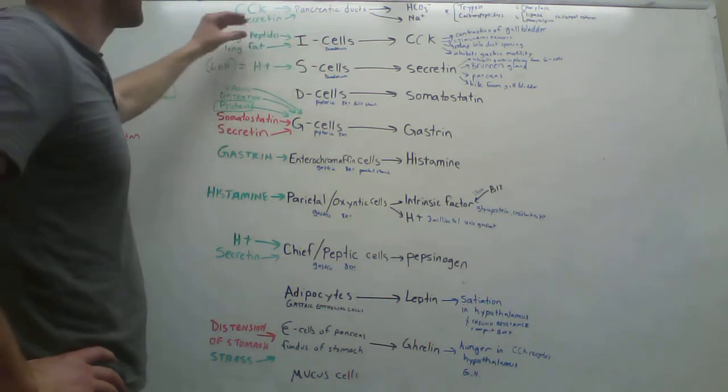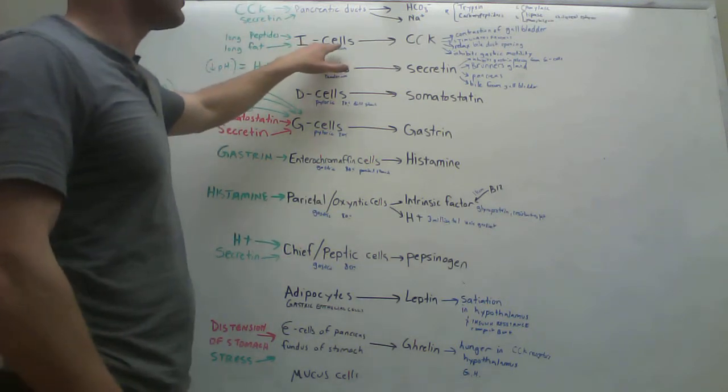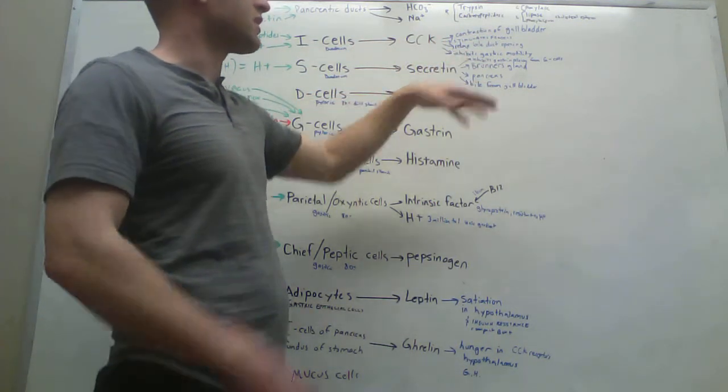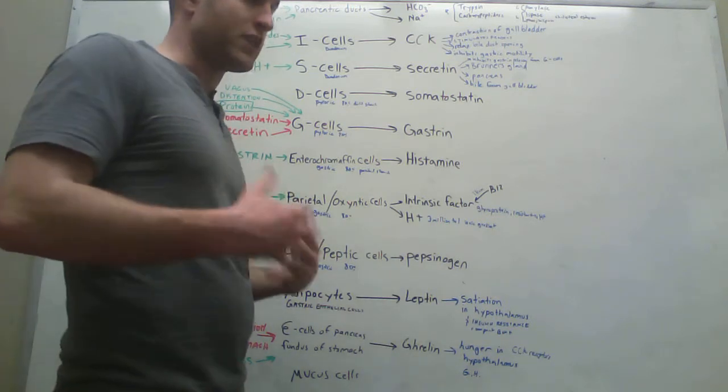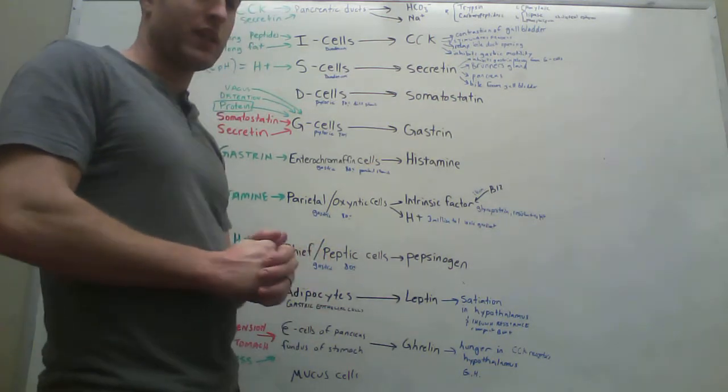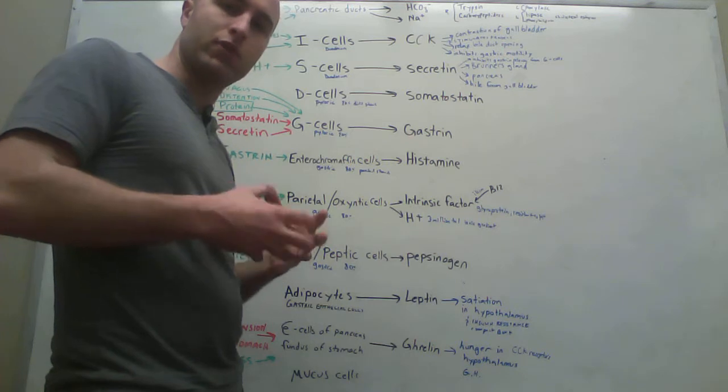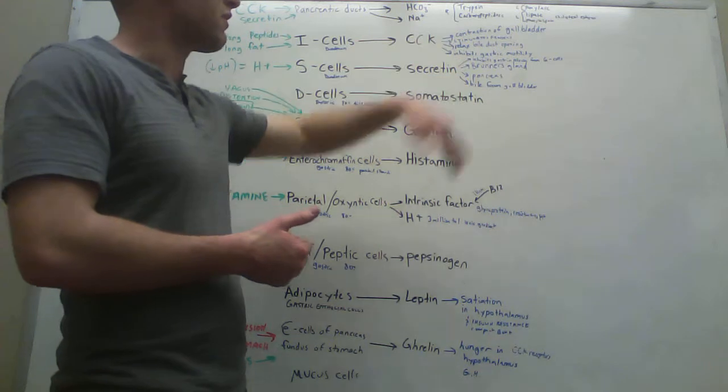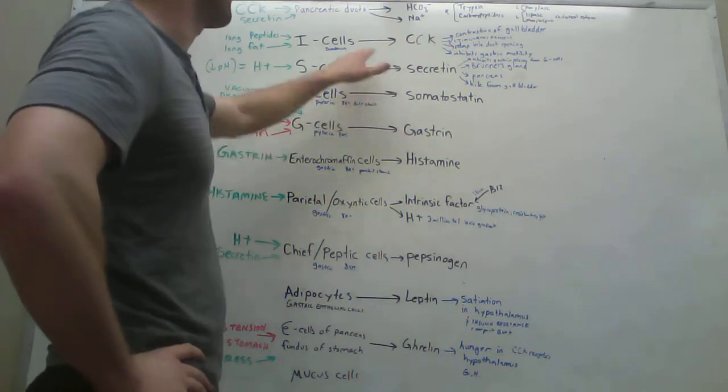These I cells that secrete cholecystokinin are stimulated by long peptides and long fat molecules. So when these I cells detect basically undigested food, they're going to say, hey, we need to stimulate gallbladder, pancreas, all these things to basically cause this food to be digested more. It's interesting here that they inhibit the gastric motility. I think that's to slow things down so that they have enough time, the food, the chyme, has enough time to mix with the enzymes and stuff being released from the pancreas.